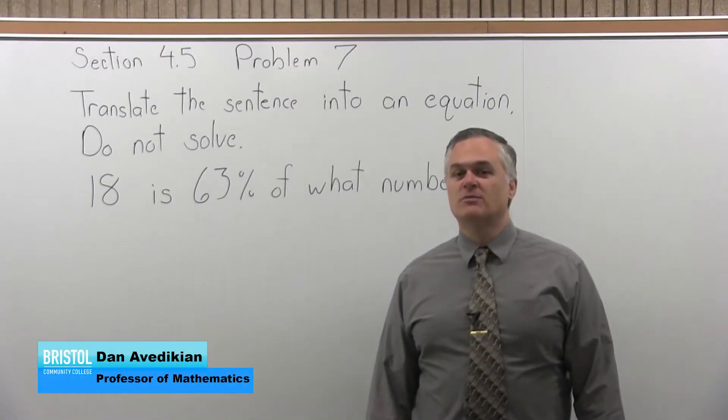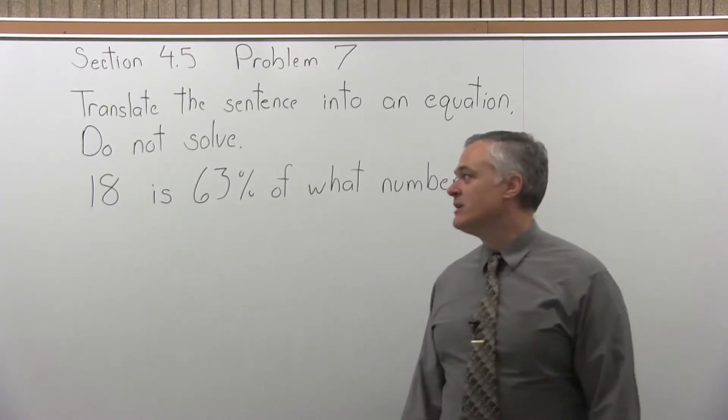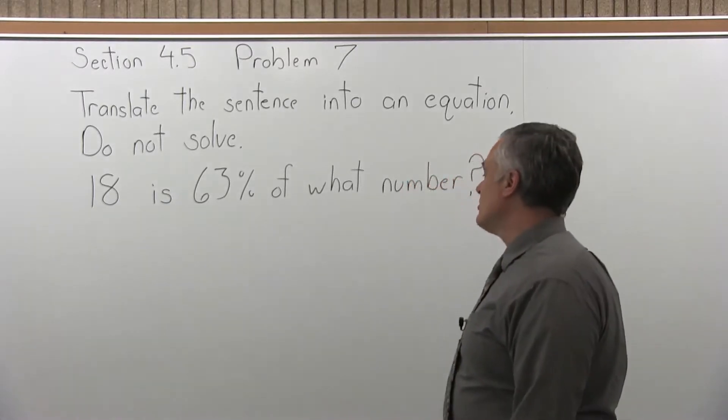This is Section 4.5, Problem 7. It says translate the sentence into an equation, do not solve. And we have 18 is 63% of what number?